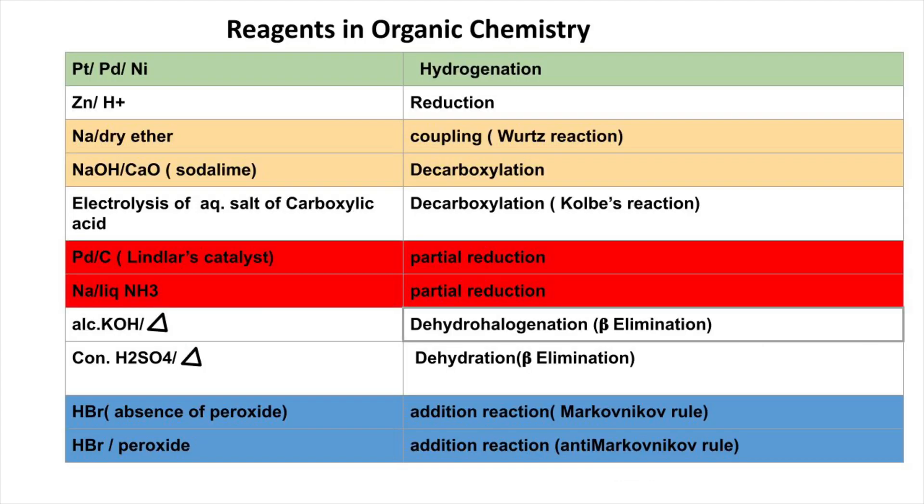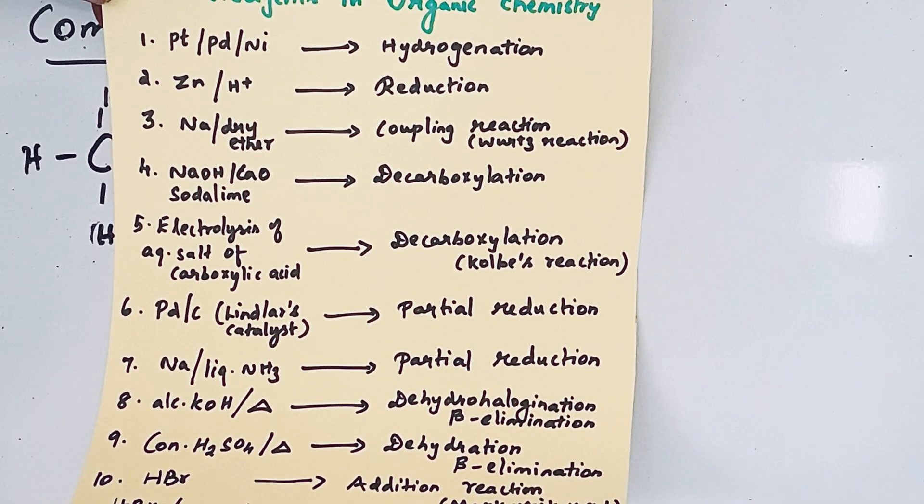The product of an organic reaction is easily predictable if you know the reagents very well. In this table you can see some of the important reagents and what they actually do during chemical reactions.